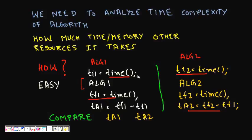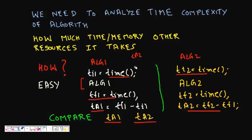If you think deeply, the first issue is that we are not even guaranteed that running the same algorithm multiple times will always give the same time. We might say: run each algorithm a hundred times, take the average, and whichever has a lower average — say tf2 on average is less — declare it more efficient. But is it really? That's the question.